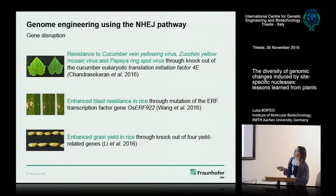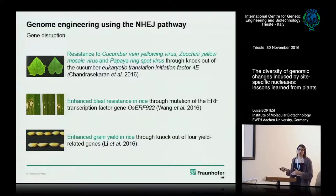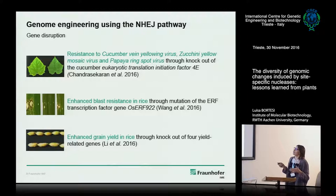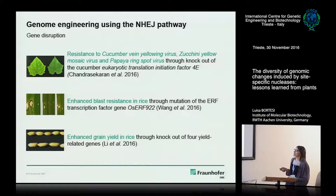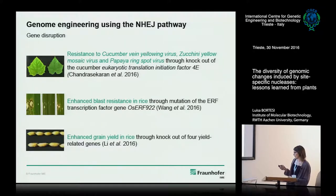Some examples of gene disruption: in two cases, resistance to pathogens was increased by knocking out genes that are used by the pathogen to invade the plant. In another case, the yield of grain in rice was increased by knocking out genes related to that trait.